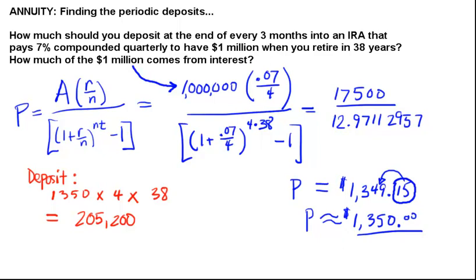And then the last thing is, we're going to take our final value of a million dollars, we're going to subtract from that the $205,200 that we deposited, and with that difference, we'll be able to determine how much money did our $205,200 make for us. That's called interest. And when you take that difference, it comes out to $794,800. So we put in $205,200, and that money made $794,800 for us in interest.